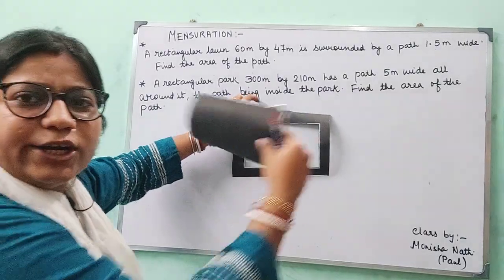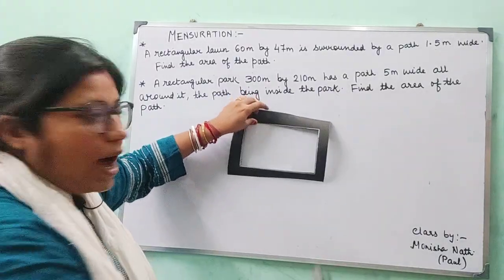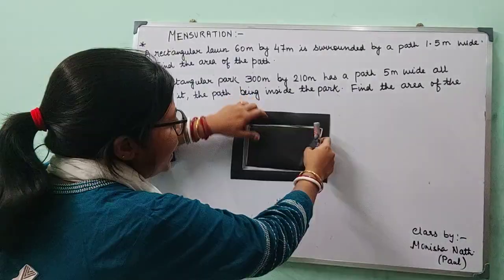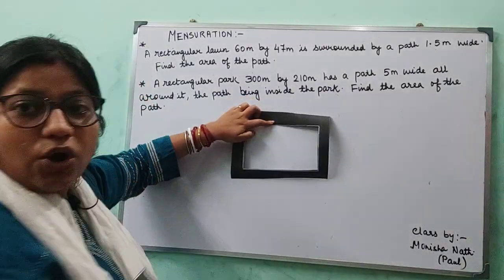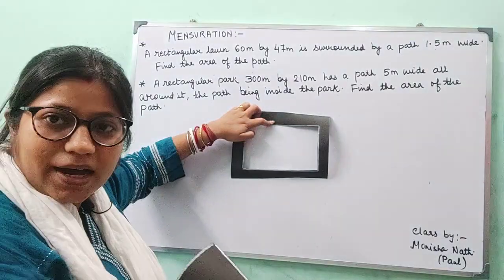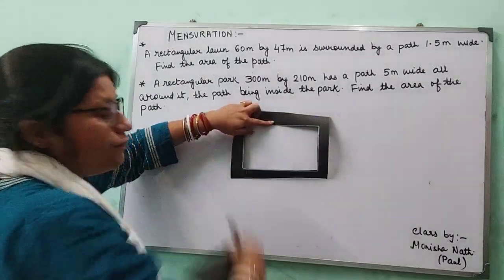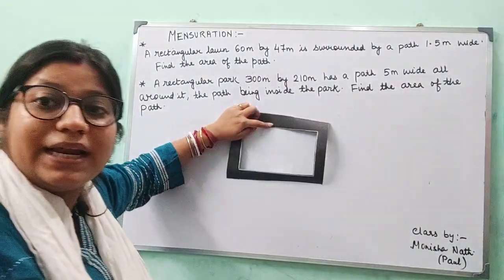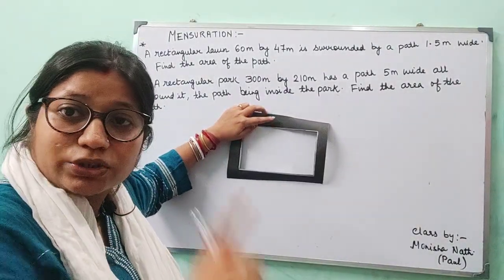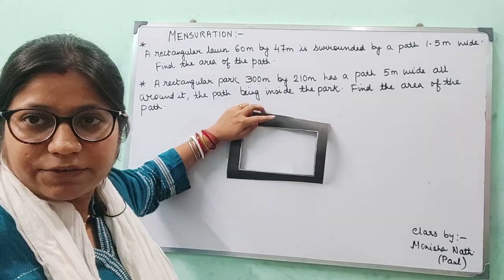So what did I do? I have taken out the lawn's area from the area of the lawn as well as the path combined. That is our objective.